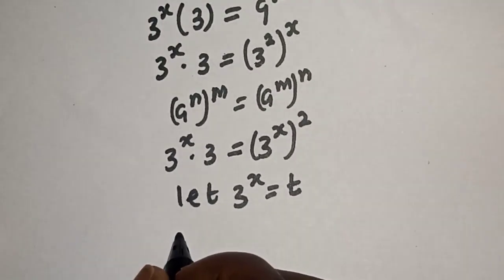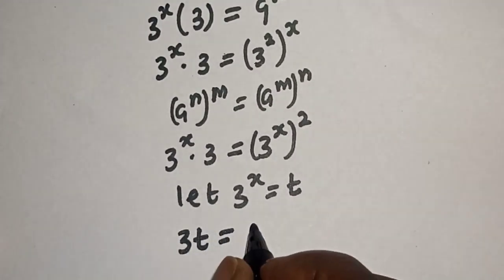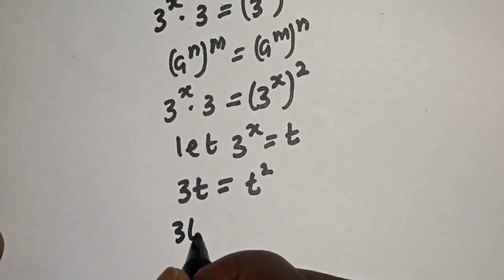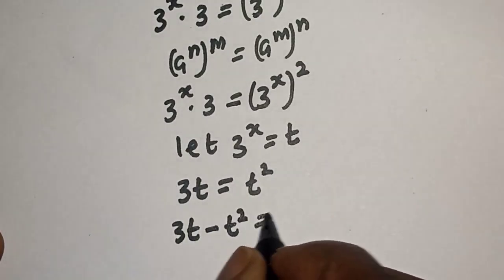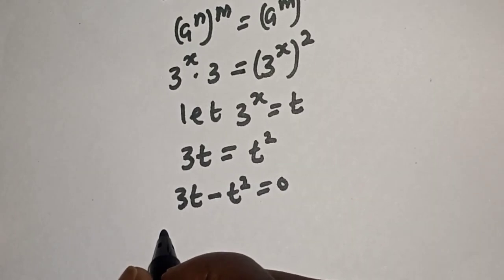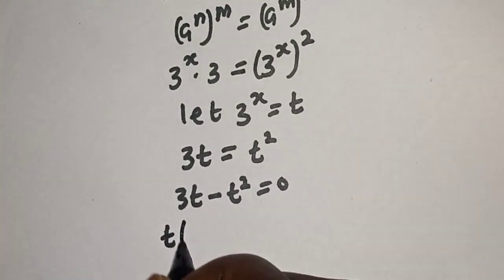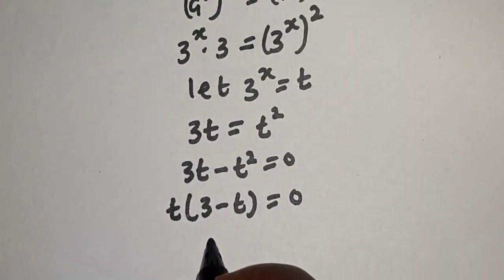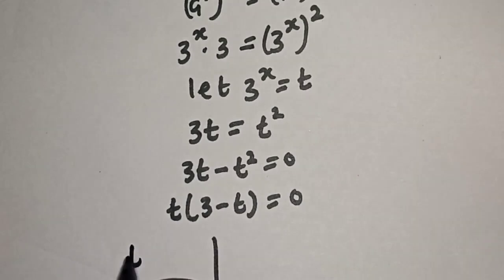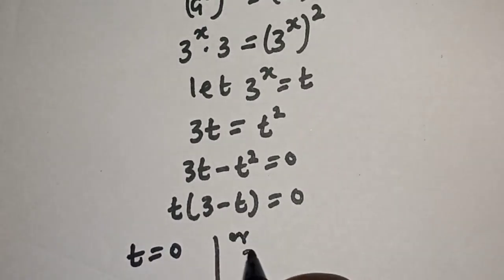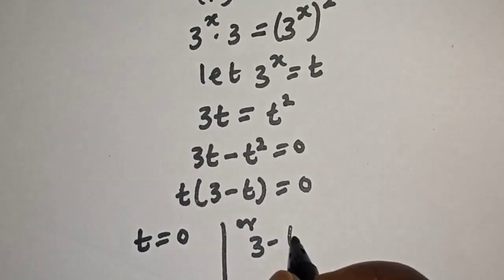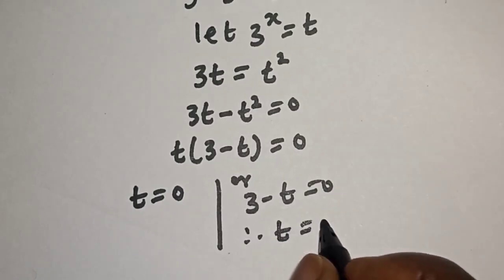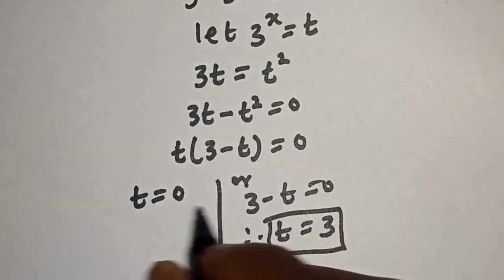We have 3t is equal to t squared. Now let's equate everything to 0: we have 3t minus t squared is equal to 0. t is common, so we have t bracket 3 minus t equals 0. There are two cases: t is equal to 0, or 3 minus t equals 0, therefore t is equal to 3.